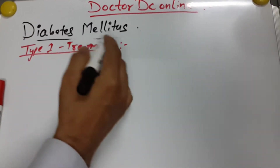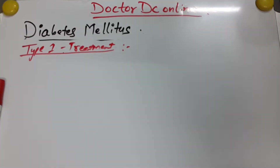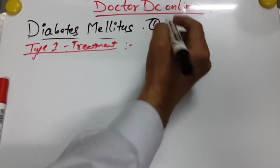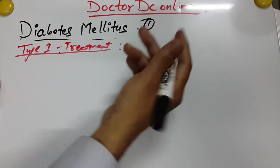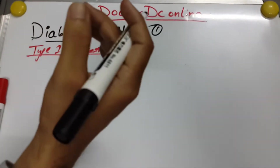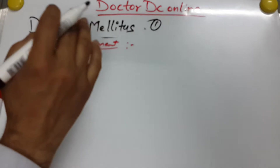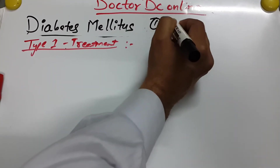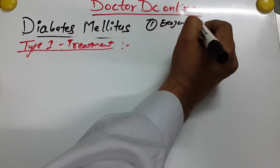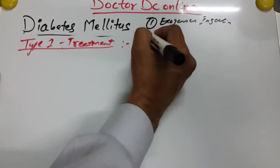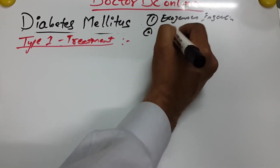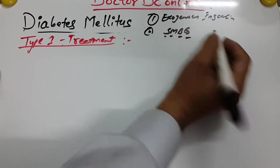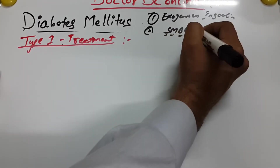Now we discuss Type 1 Diabetes Mellitus treatment. In Type 1 diabetes mellitus there is complete destruction of beta cells, so there is no production of insulin. That's why we need to give exogenous insulin. After giving exogenous insulin, we need to do SMBG — self-monitoring blood glucose level — which is very important.